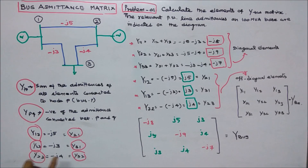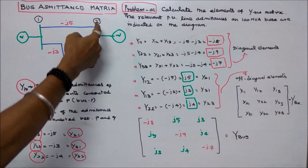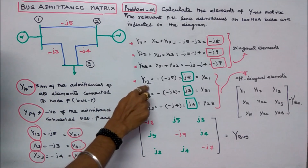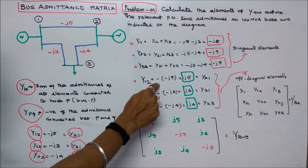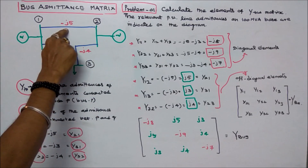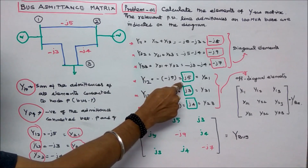Y13 given is minus J3, and Y31 equals minus J3. Y23 given is minus J4, and Y32 equals minus J4. Y12 is equal to negative of minus J5, which equals J5.